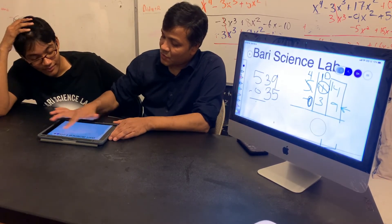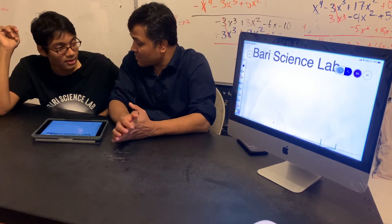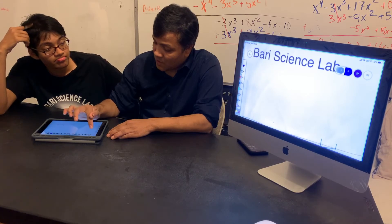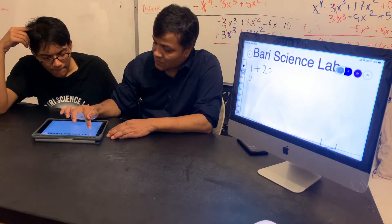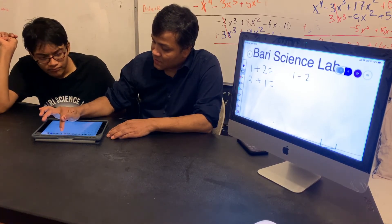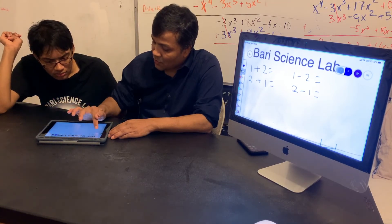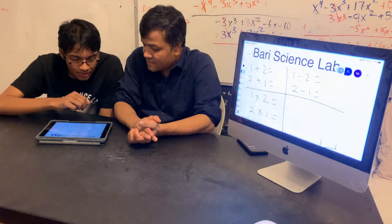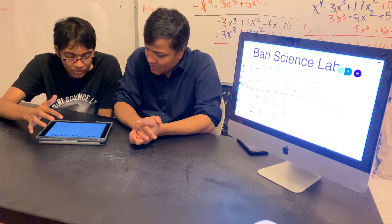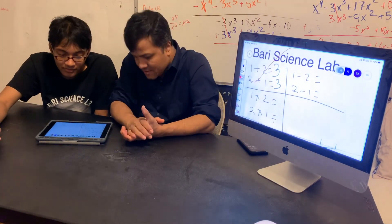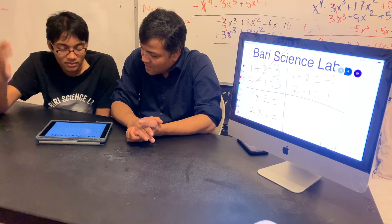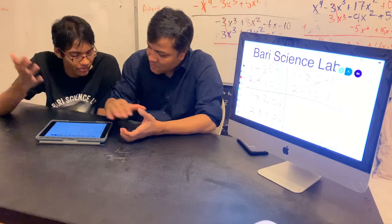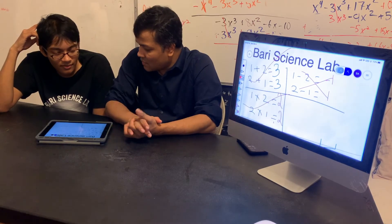Now we're going to do multiplication. Can you guess whether multiplication is commutative or not? It cannot be — just because subtraction was not commutative. Let's see: one times two is two, two times one is two. It passed the test — it's commutative. Does it make it look good? Makes it look better.